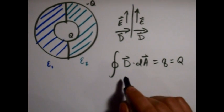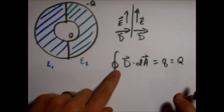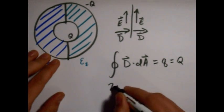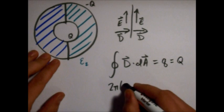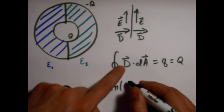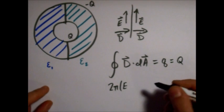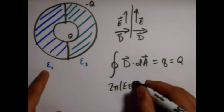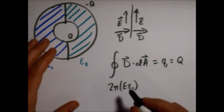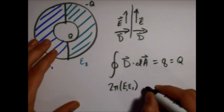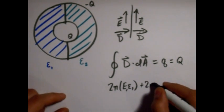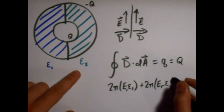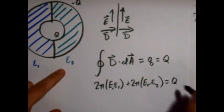Okay, now when we take this integral on one half, we'll get, for the area, we'll get 2 pi. And there'll be times the, so the D on one half will be E times epsilon 1. And this is all in the radial direction. Plus the other half here, so 2 pi, and epsilon 2 this time, equals big Q.